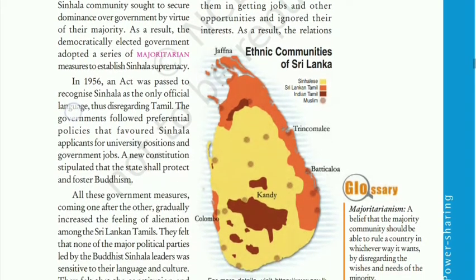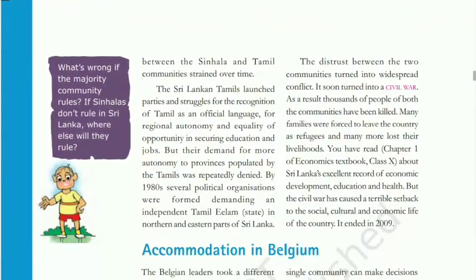The Tamils wanted an independent state, which they called Tamil Eelam, but their demands were not given any importance by the leaders. They also wanted Tamil as an official language, regional autonomy, and equality of opportunity in government jobs. But the distrust between the two communities turned into widespread conflict and soon into a civil war — a type of violent internal conflict between two groups within the same country.